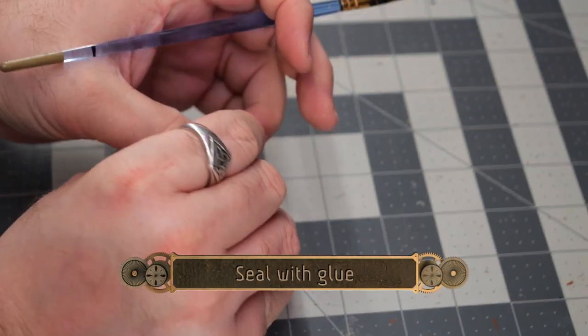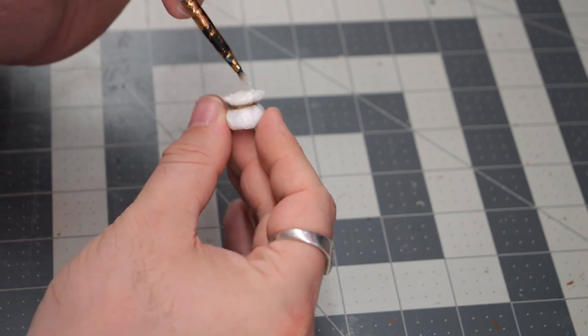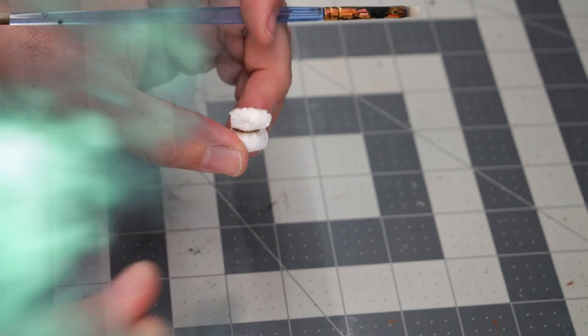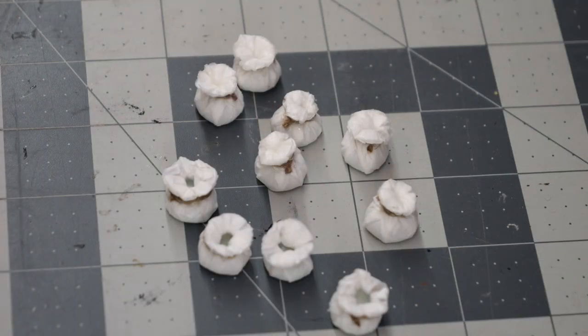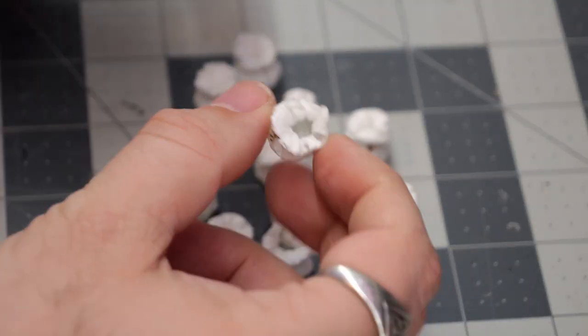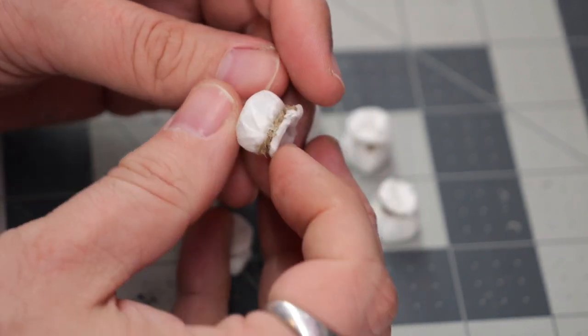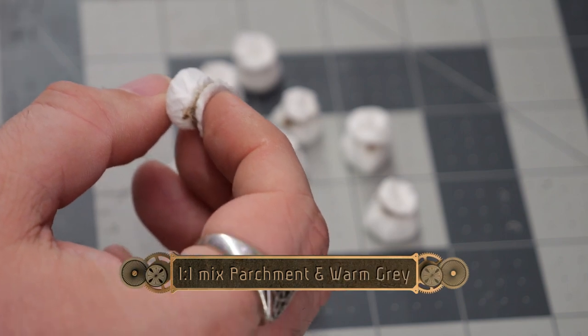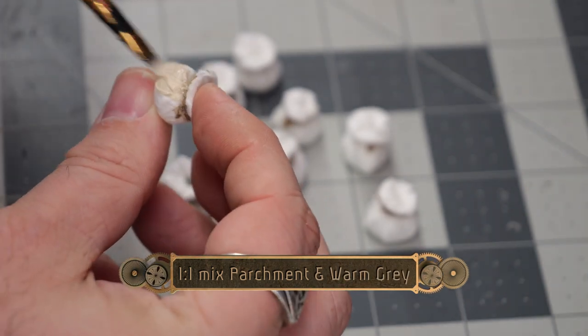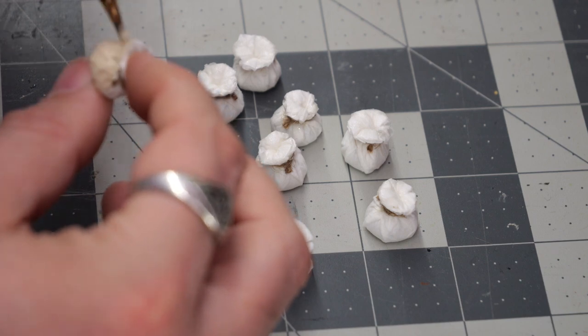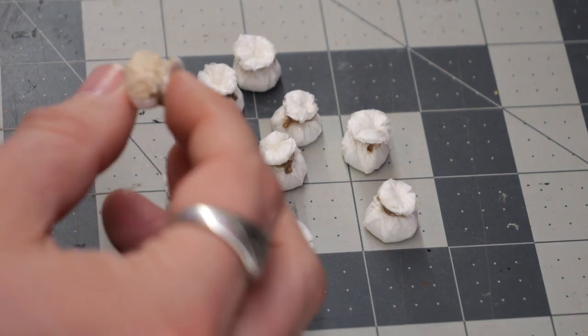Now we're going to seal the whole thing with some glue. I'm using Mod Podge for this, but you can use anything that dries relatively clear. Alright, so I did some that were open and some that were closed, so now we've got to paint them up and make them look more cloth-like. To do that, we're going to use a one-to-one mix of parchment and a warm gray. This will give them a very nice natural cloth sack look.